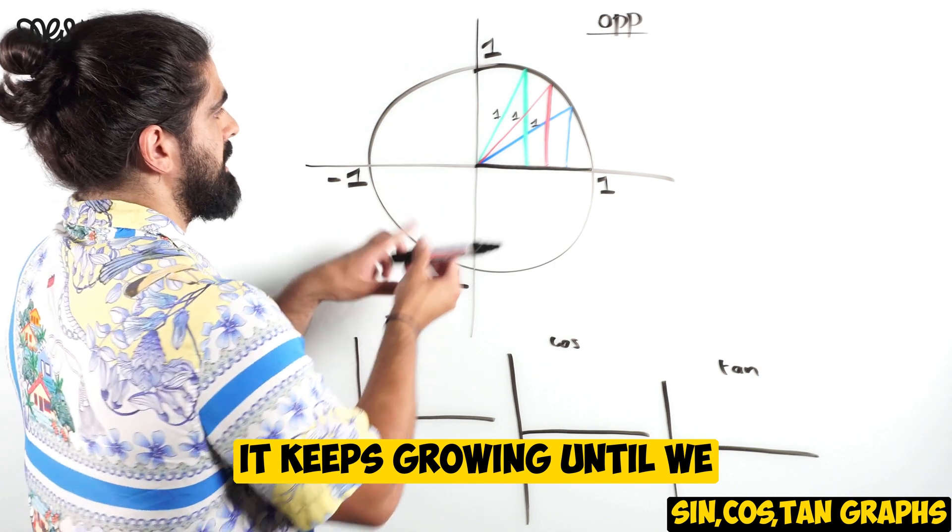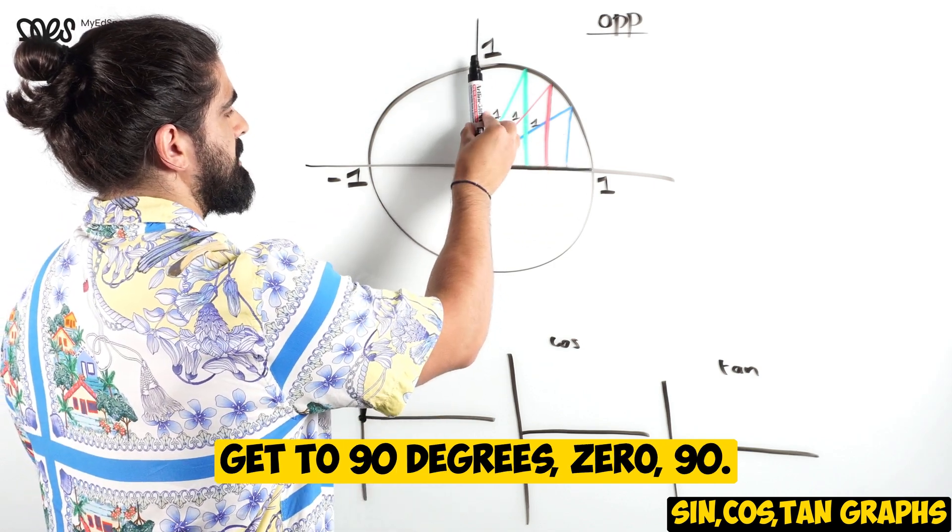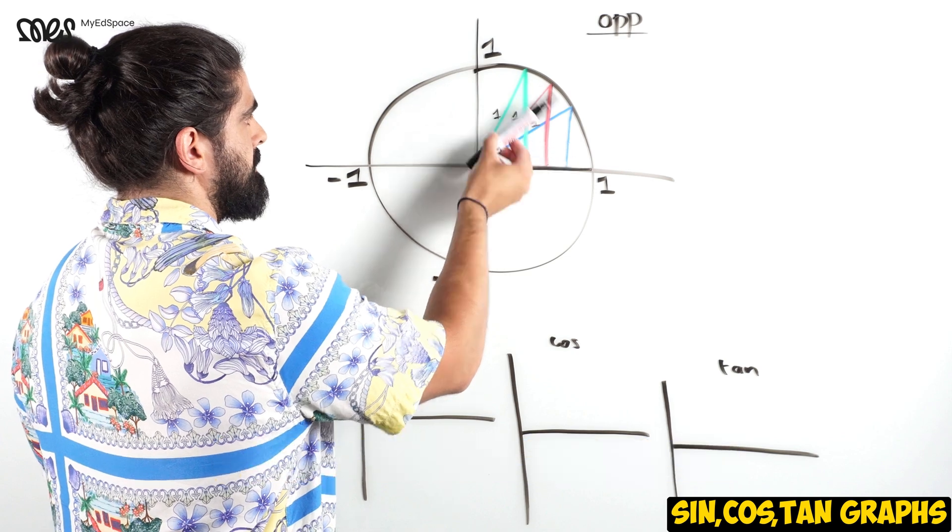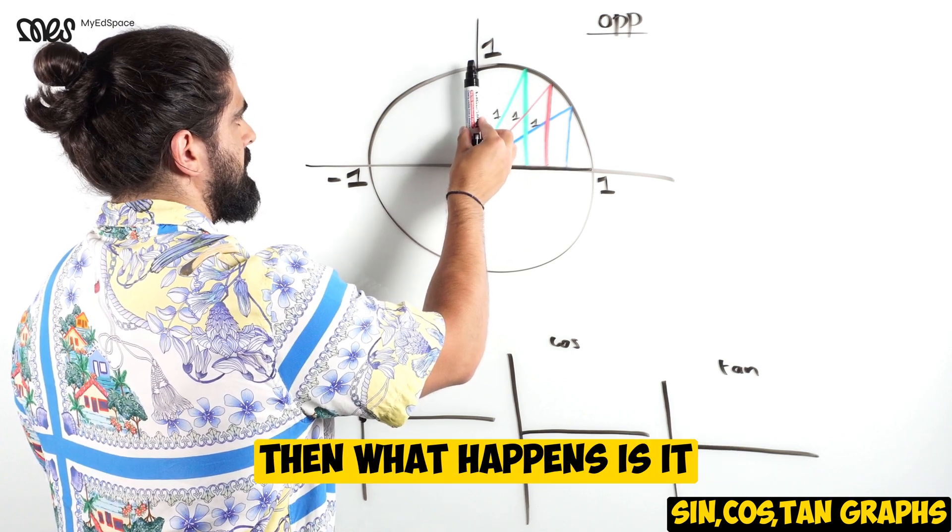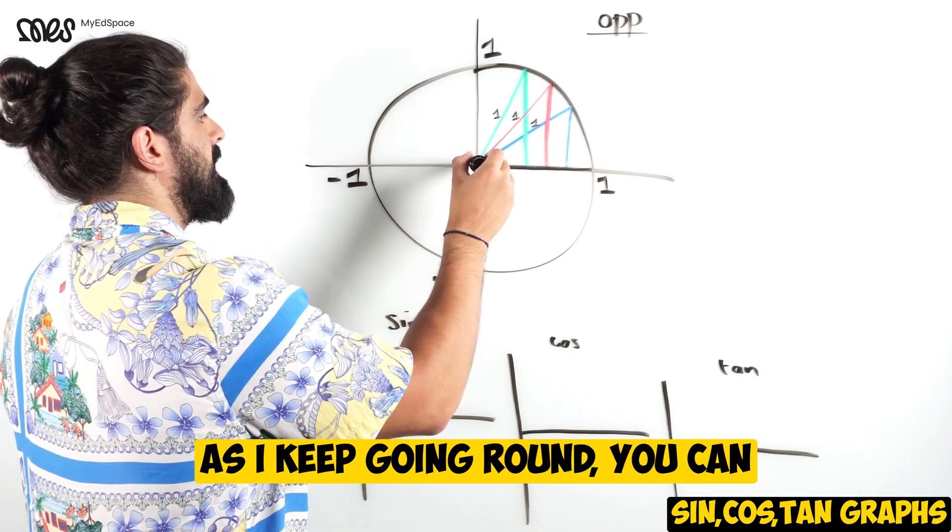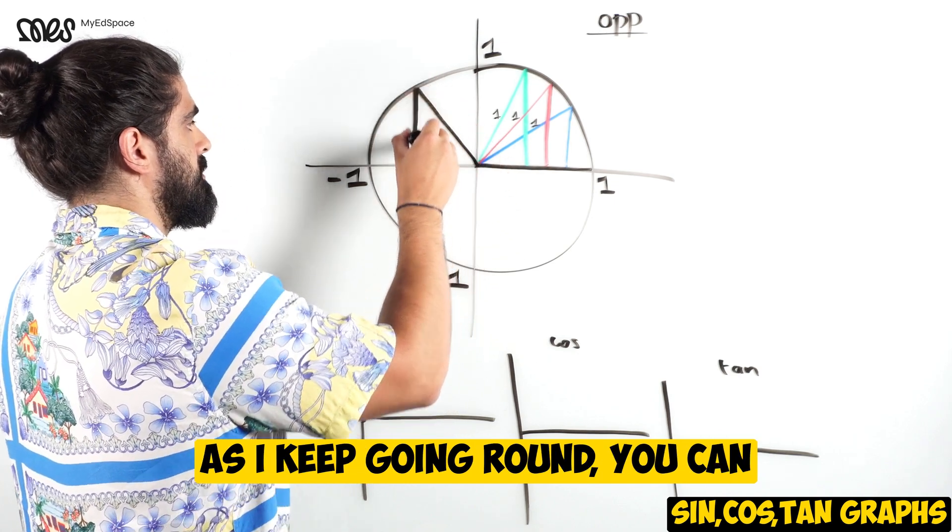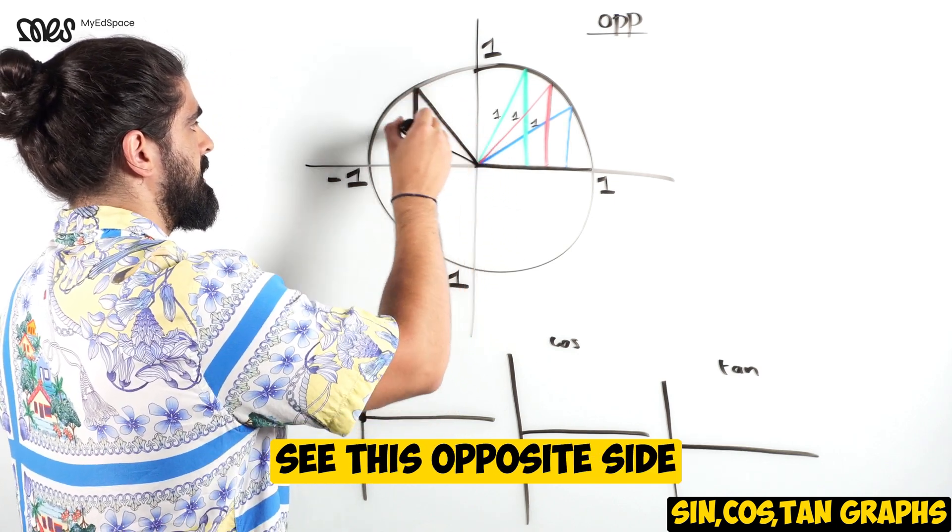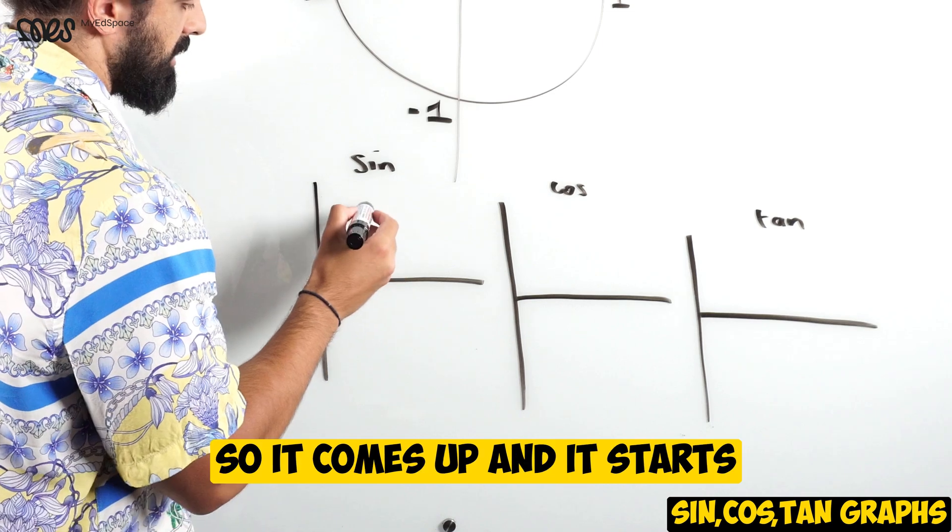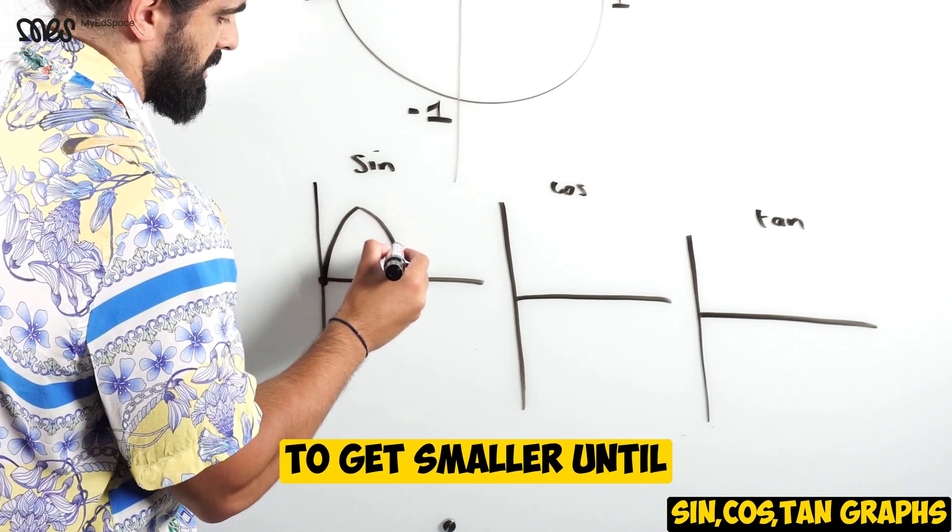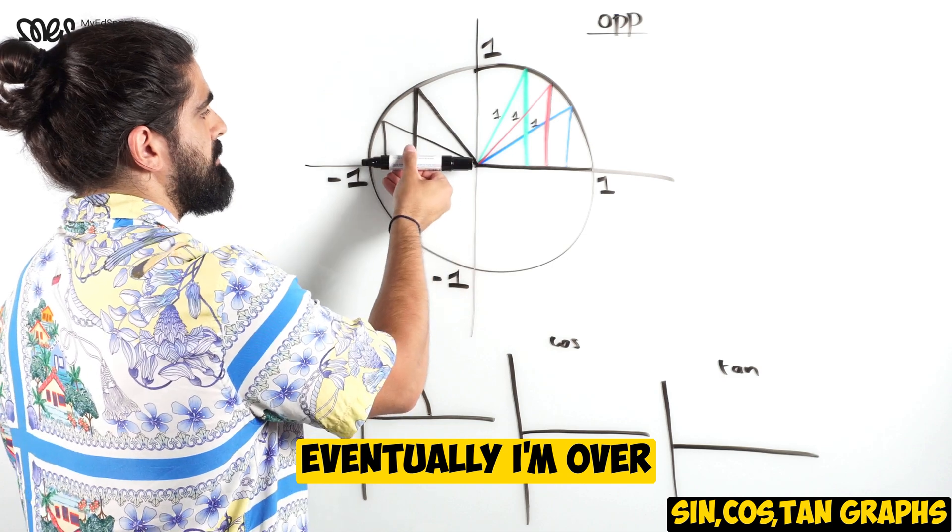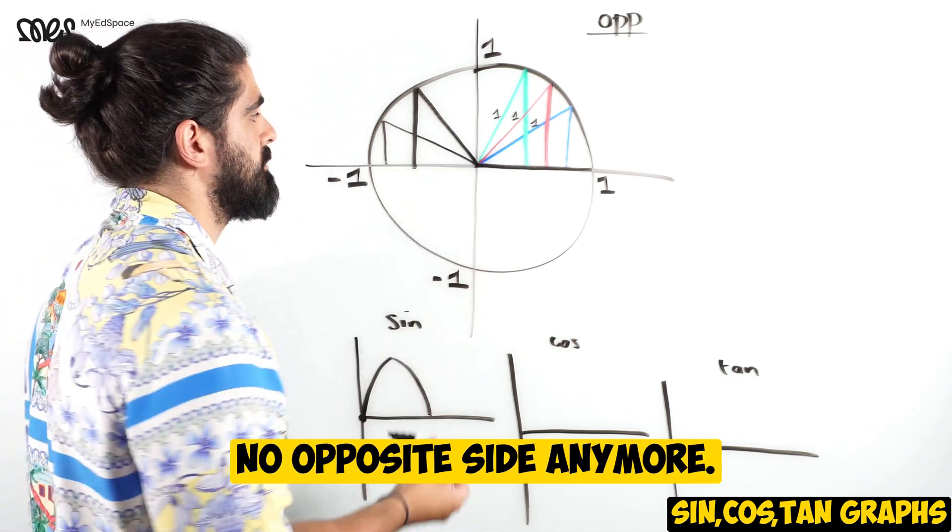So the sine graph starts at zero and then it grows. It keeps growing until we get to 90 degrees. Then it starts getting smaller. As I keep going round, the opposite side is getting smaller until eventually I'm over here and there's no opposite side anymore.